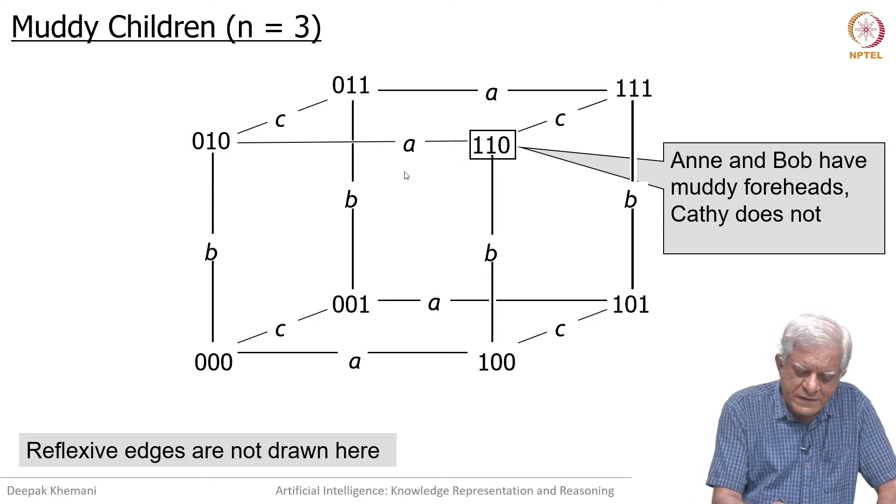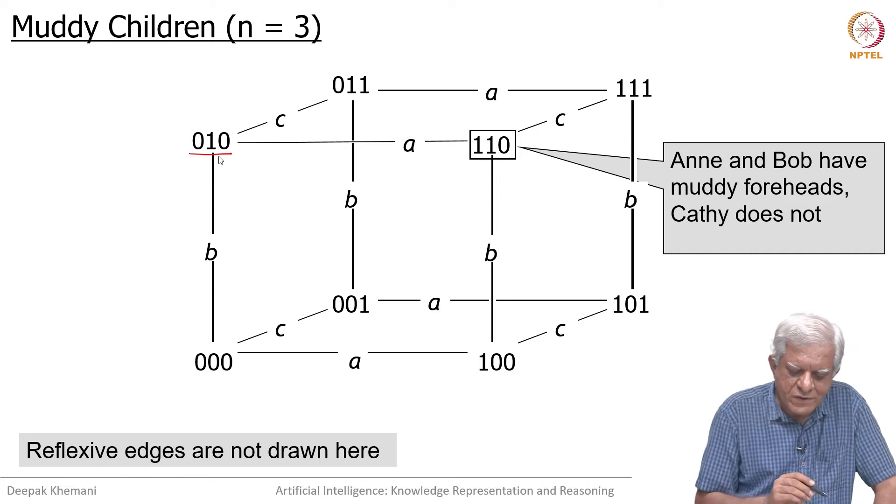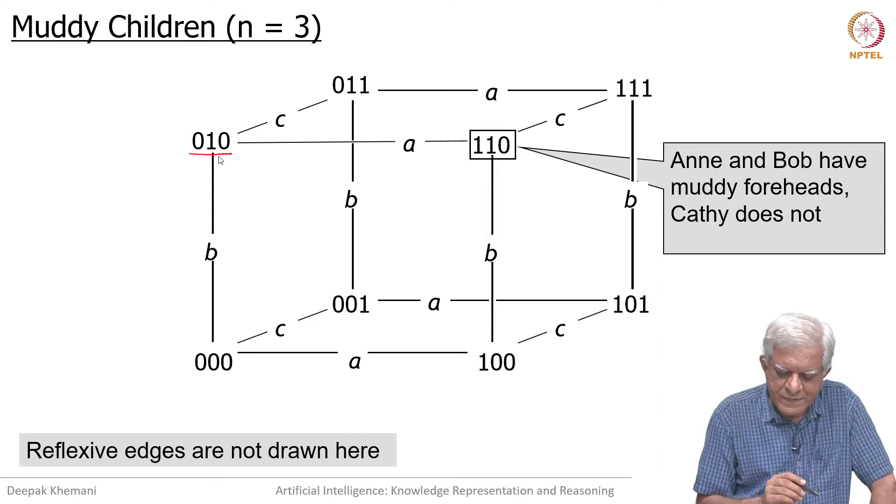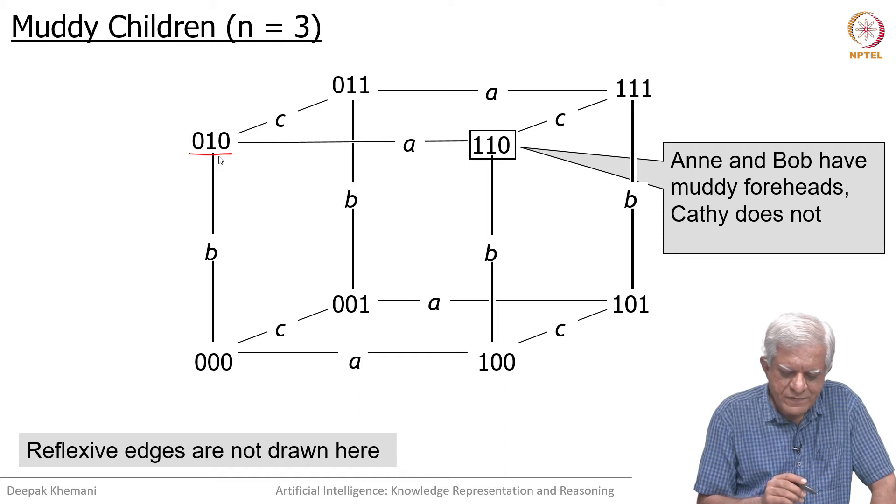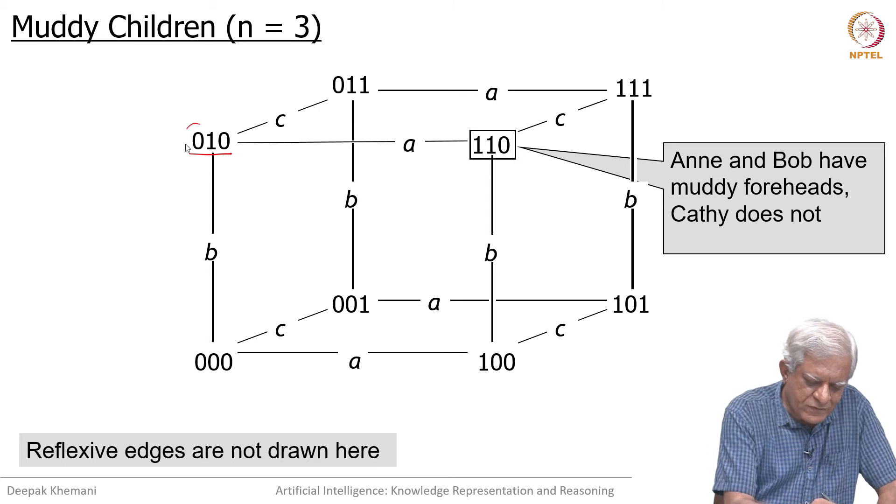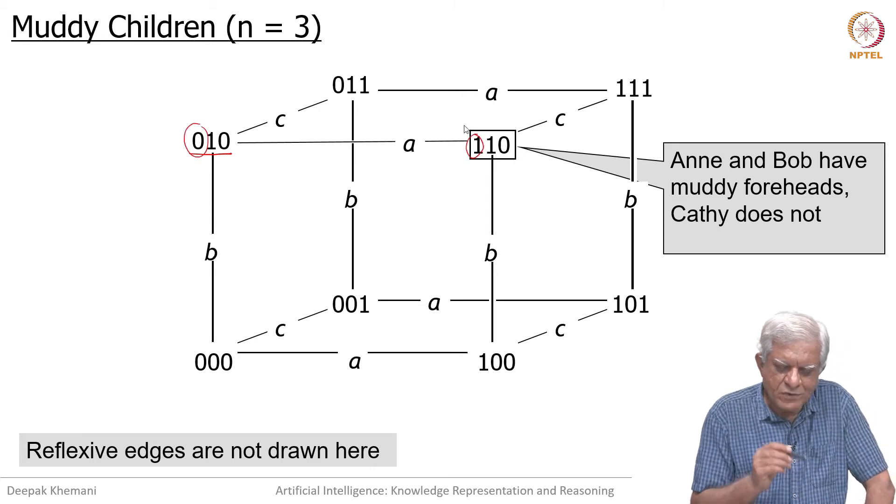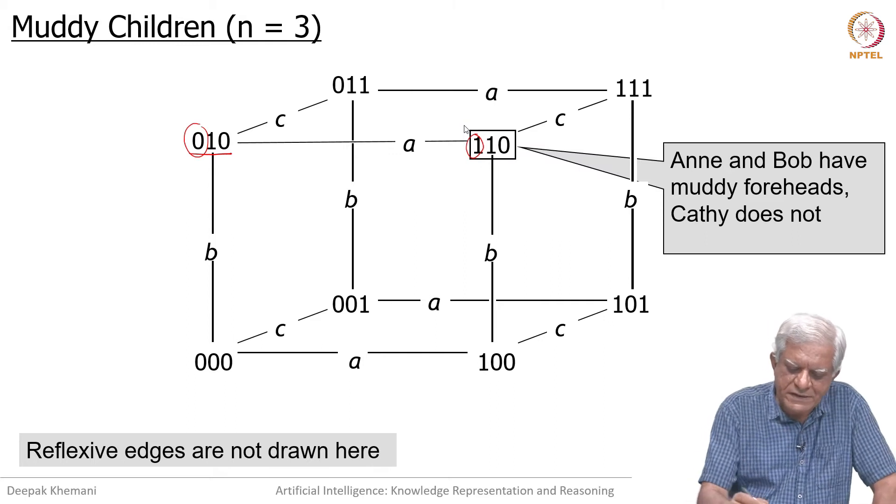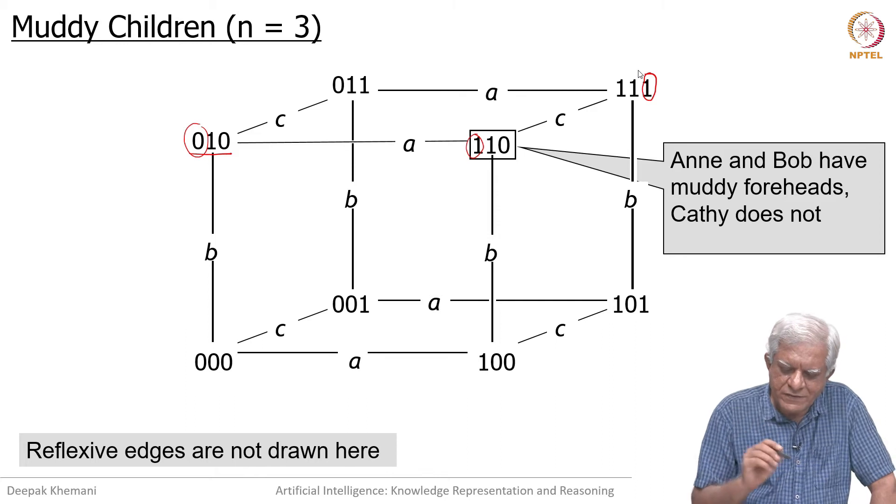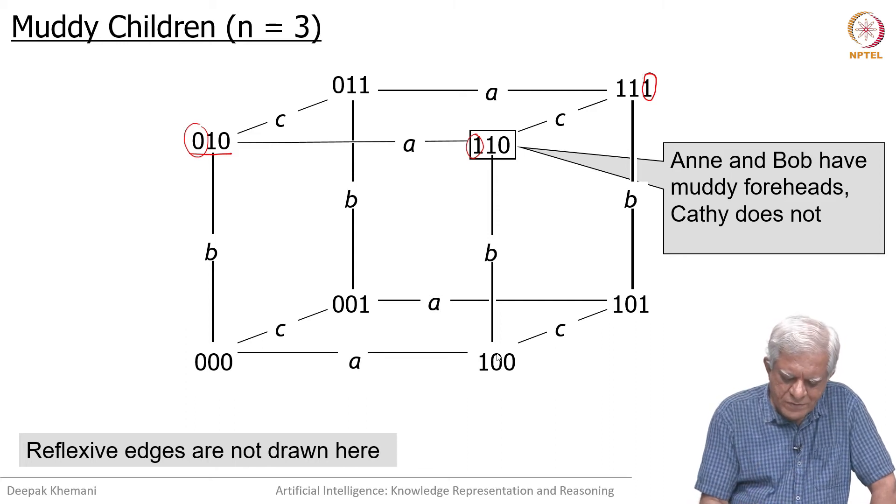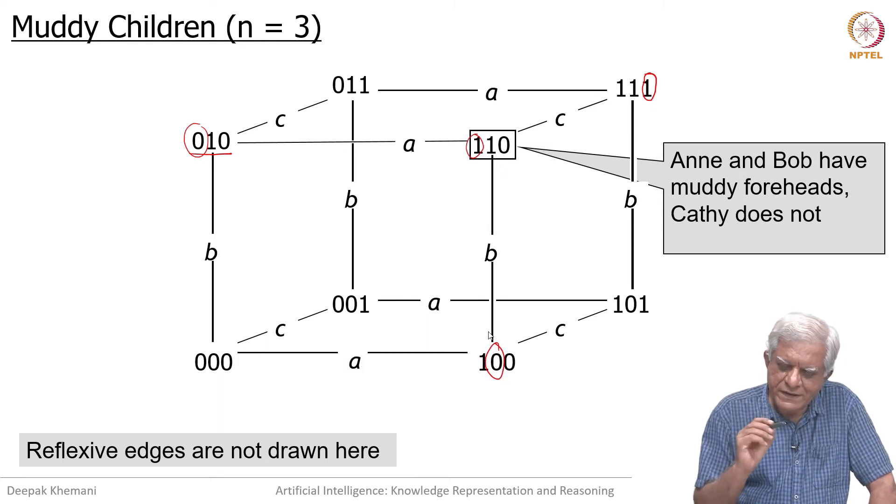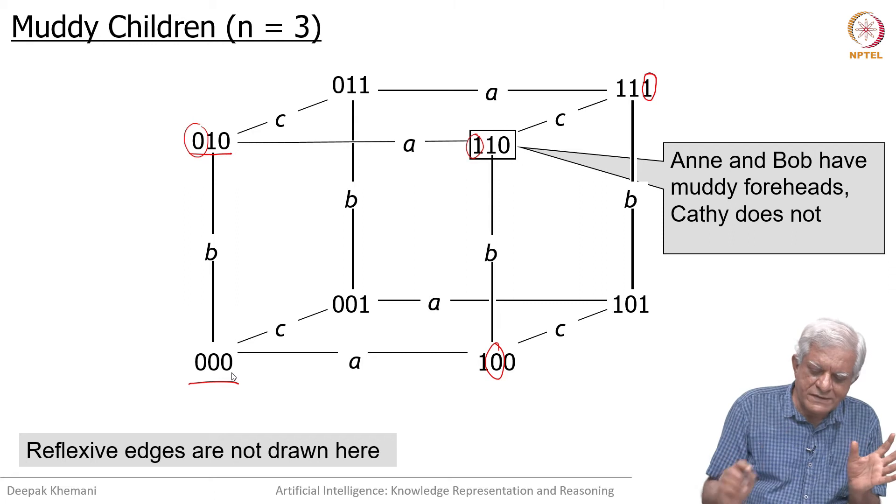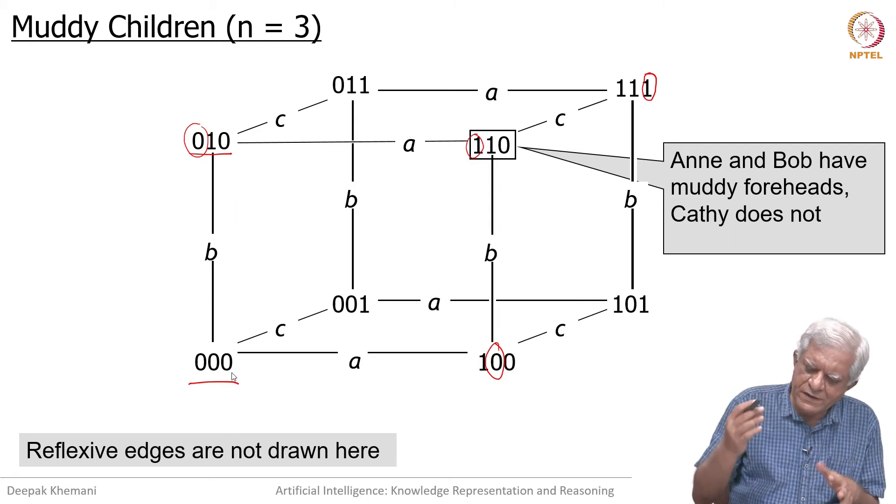In the given world, Ann cannot distinguish the fact where she does not know that Bob's forehead is muddy, but knows that Bob's forehead is muddy and knows that Kathy's forehead is not muddy. Likewise, Kathy cannot distinguish between the fact where she does not know whether she has a muddy forehead or not. It could be in either case, and likewise for Bob. Bob also does not know whether he has a muddy forehead or not. This is the situation when we start with the extreme case 000 when no foreheads are muddy, and the other end is 111 where all foreheads are muddy.